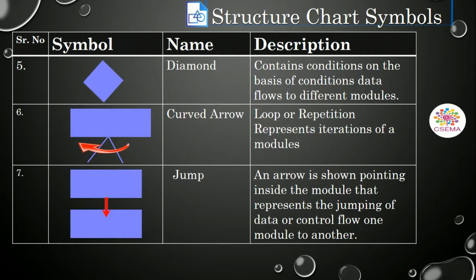And the fifth symbol is a diamond. As same as the flow chart, diamond is used to represent the conditions in the structure chart. And on the basis of the conditions, data flow is determined from one module to another.